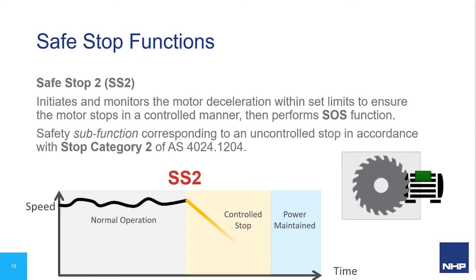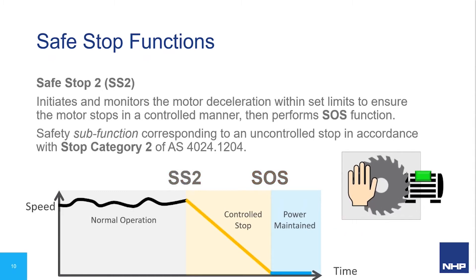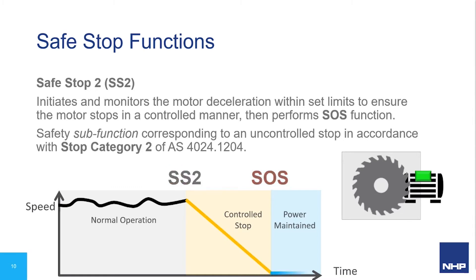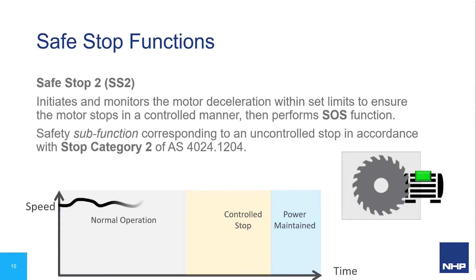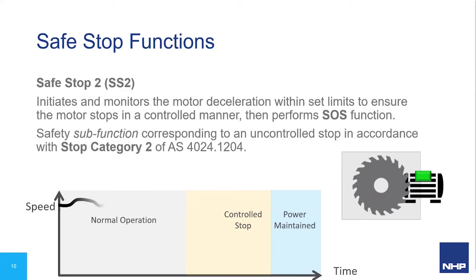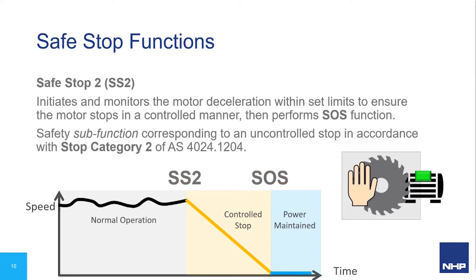Safe Stop 2, or SS2, is another safe stop function which initiates a controlled stop much like SS1. However, while SS1 initiates an STO at the end of the ramp down, SS2 instead issues an SOS command once standstill has been reached. This corresponds to a Category 2 stop as defined in AS4024, but cannot be used for emergency stop in accordance with this standard, as emergency stop requires complete removal of power — which SS2 does not offer. Rather, it should be used for other non-emergency modes of the machine.